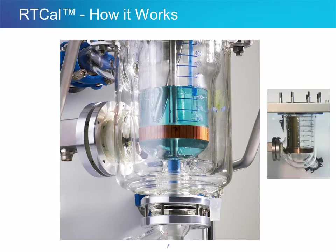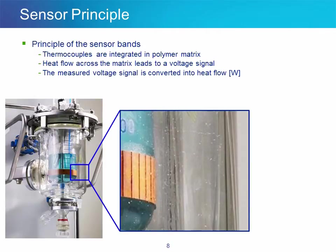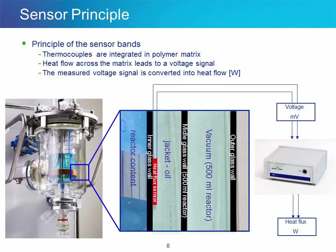This is a large picture of the RT-Cal vessel where you see the two types of sensors at the bottom and in the back. If you look closer, you will see the reaction mixture here on the left and the inside reactor wall. The sensors are located on the outside of the vessel wall, in contact with the jacket fluid. The vessel is also equipped with a layer of vacuum to provide better efficiency at very low temperature.